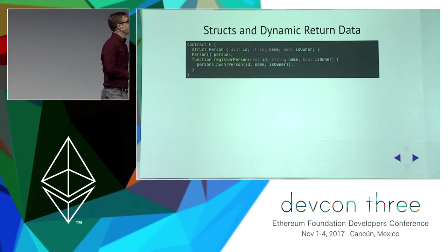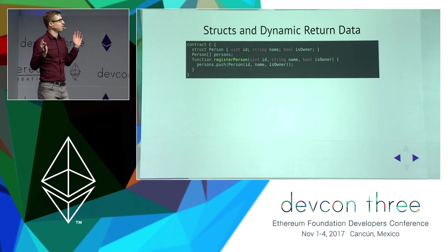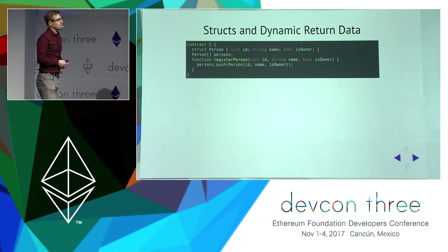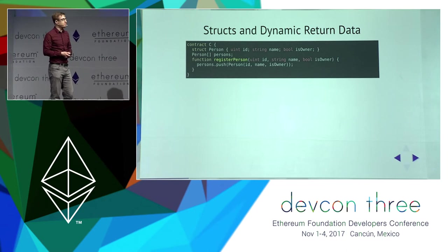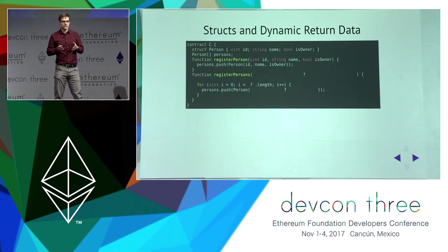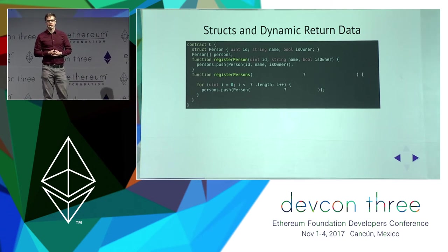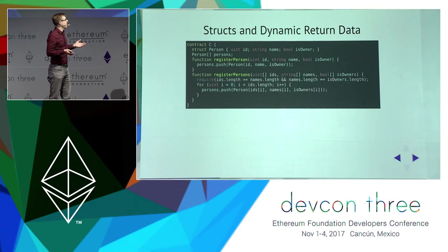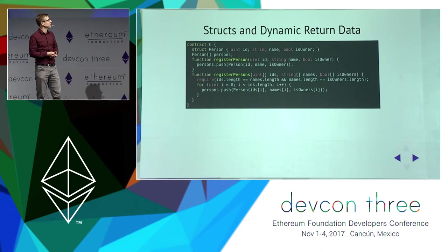Here is a simple database contract that stores people by an identifier, a name, and some flag indicating whether they are owner of something. You have a function which allows you to add one person to the database. But it gets more complicated if you want to add a function that appends a list of people. The problem many people run into is you have to create an array out of these three things, and what you usually do is add three parameters which are each an array. This creates the problem that you have to check that all of them have the same length.